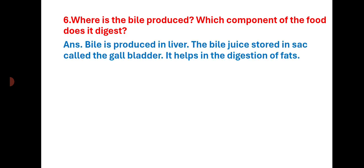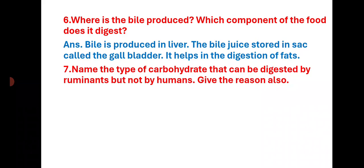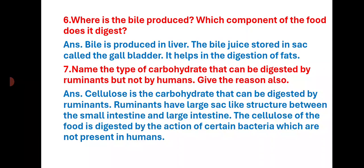Where is bile produced? Which component of the food does it digest? Bile is produced in the liver. The bile juice is stored in a sac called the gallbladder. It helps in the digestion of fats.